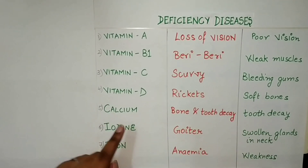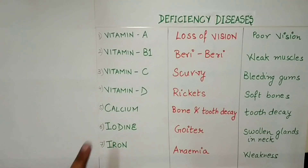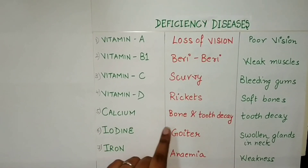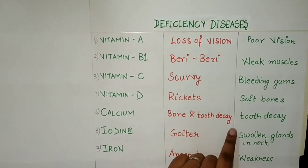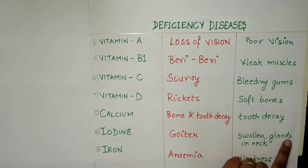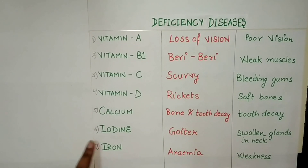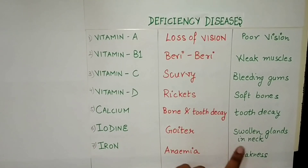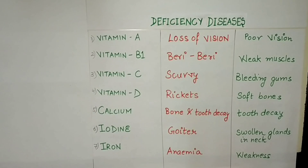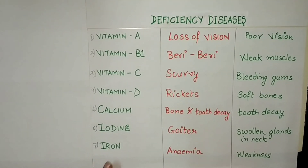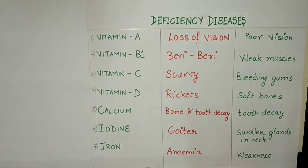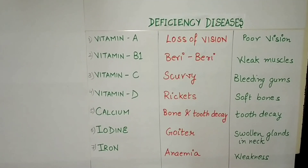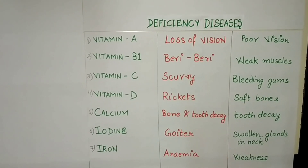Now for the minerals: lack of calcium would cause bone and tooth decay; the symptom is tooth decay. Lack of iodine would cause goiter; the symptom is swollen glands in the neck. Lack of iron would cause anemia; the symptom is weakness.